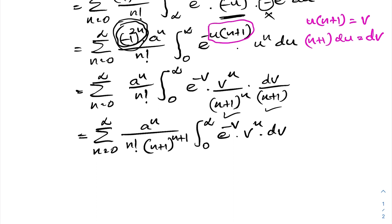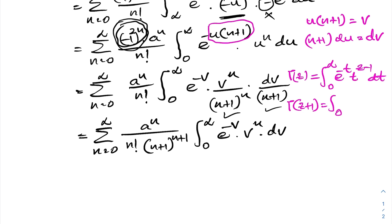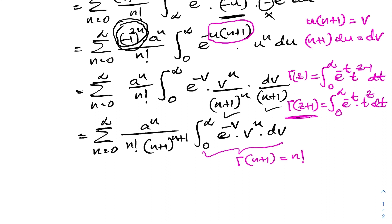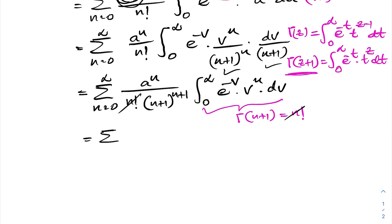Let us recall the definition of the gamma function: gamma of c equals the integral from 0 to infinity of e to the minus t times t to the c minus 1, dt. So if we take gamma of c plus 1, this equals the integral from 0 to infinity of e to the minus t times t to the c, dt. Our integral equals gamma of n plus 1, and gamma of n plus 1 equals n factorial. So n factorial cancels, and we have the infinite sum of a to the n over n plus 1 raised to the n plus 1.